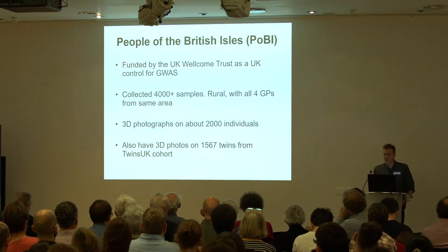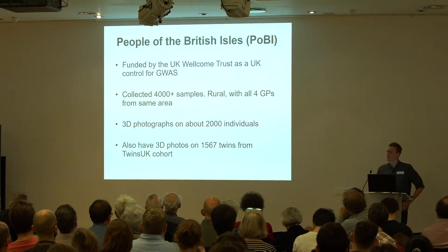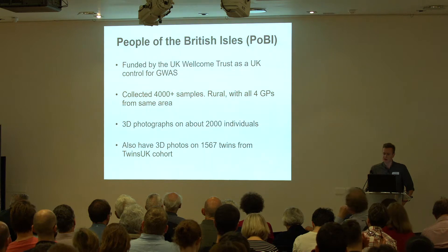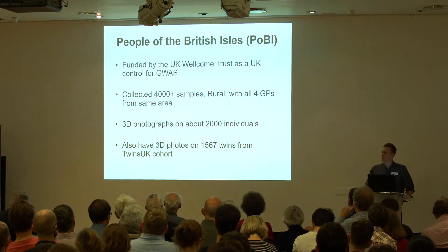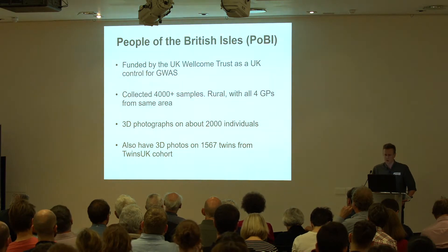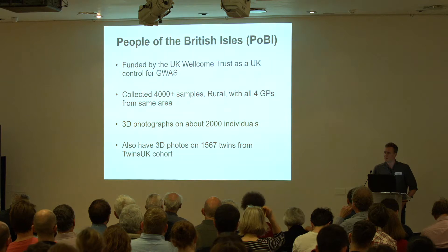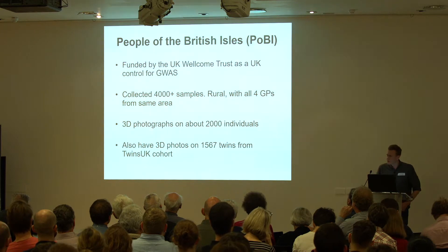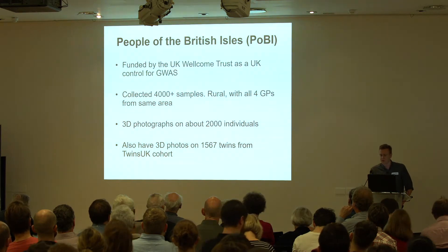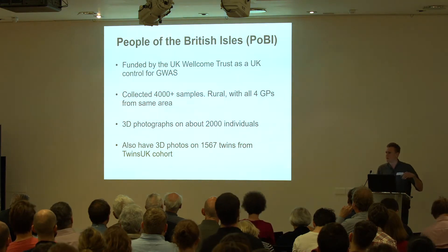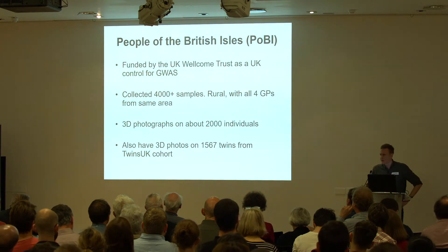The dataset we're using is the People of the British Isles, funded by the Wellcome Trust about 15 years ago, consisting of about 4,000 DNA samples. It's unique in that the majority of individuals have at least three grandparents from within the same geographic region, so it's very well controlled for population structure. More recently, we obtained 3D photographs on about 2,000 of them, in addition to other phenotypes like hair color and skin color. We also have 3D photographs on 1,500 twins — around 350 to 400 MZ twins and a similar number of DZ twins.